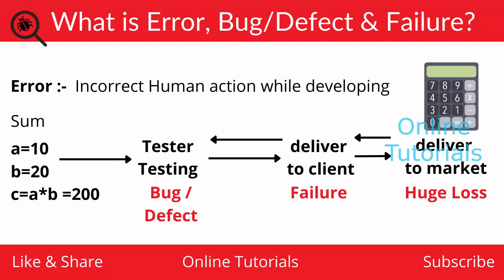Error means any incorrect human action — that is the definition in the context of development. A bug is the deviation between the expected result and the actual result. If the developer misses something, and the tester also misses some defects while executing test cases, that particular defect remains. After delivering the application to the client, he may find some mistakes.